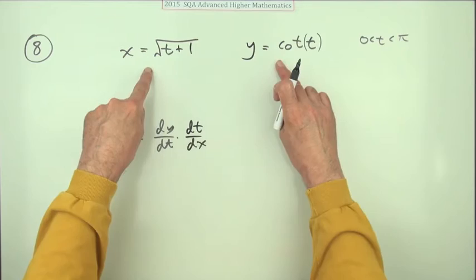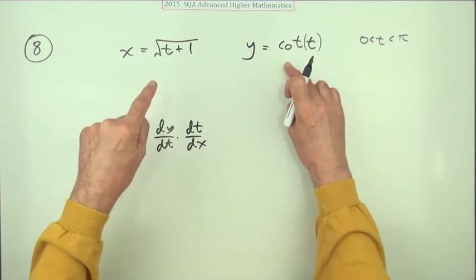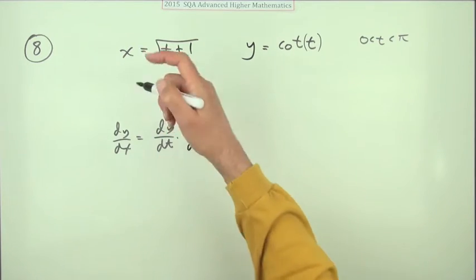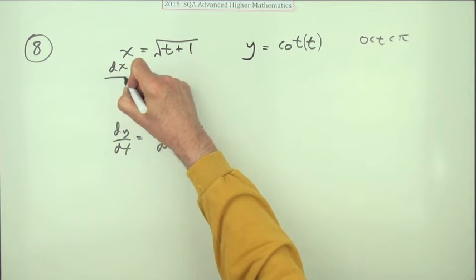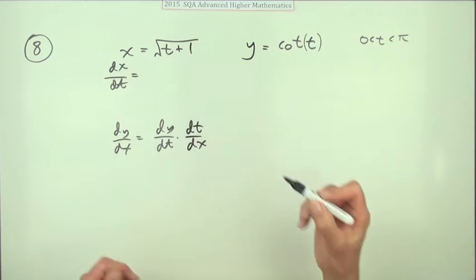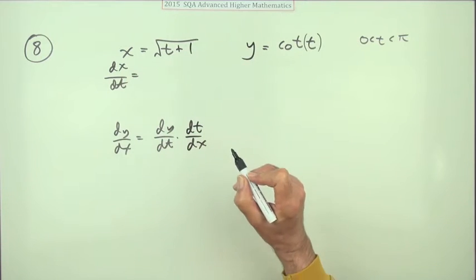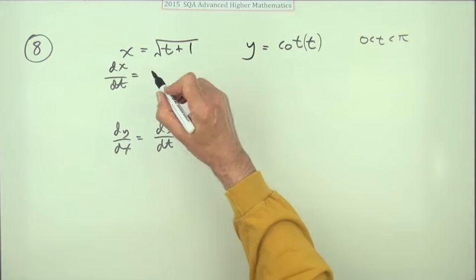You could find both of these straight away, and there'll be a mark for each. For this one, dx by dt will be—you can put it in index form if you like—that's power a half, so it's multiplied by the power, so it'll be a half times it, take one off the power, it'll be negative a half.